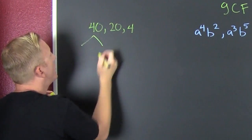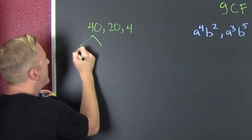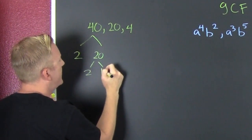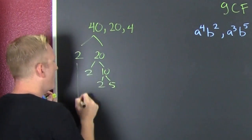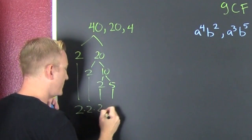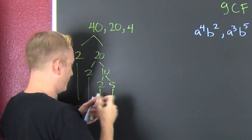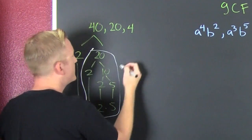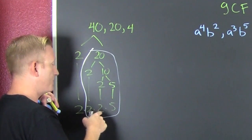It's factor time! Let's break down 40: that's 2 and 20, that's 2 and 10, that's 2 and 5 — bring it on down. Two times two times two times five. And 20: that's 2 and 10, it's 2 and 5, it's two times two times five.